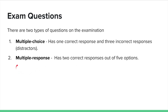The second type is multiple response. In the first type there was only one correct response, but here you have two correct responses and there are five options to choose those two answers from. Again, the rest of the answers look correct, but you should have a solid understanding to choose the right answers.